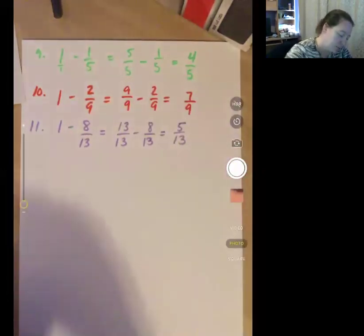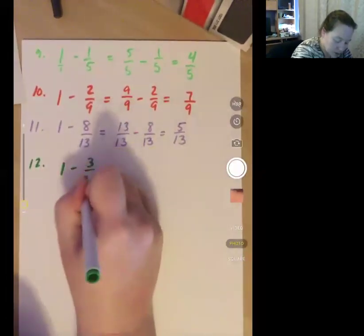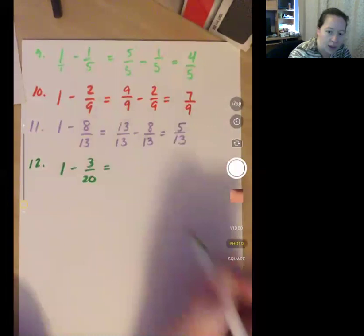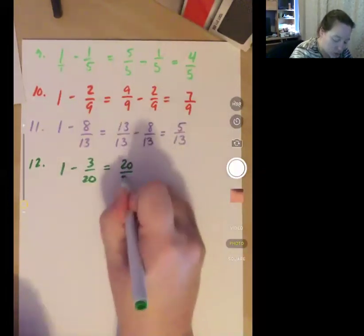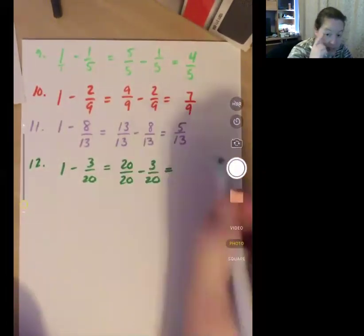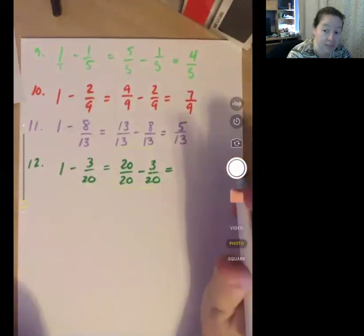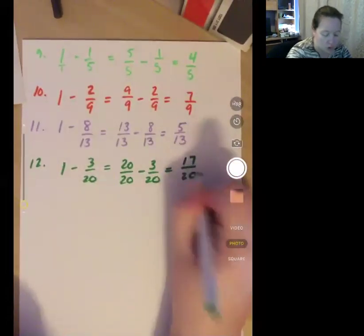Number 12, 1 minus 3 twentieths. I'm going to change that 1 into a 20 over 20 minus 3 twentieths. 20 minus 3 is 17 over 20.